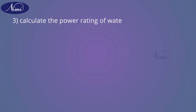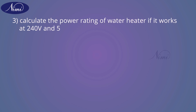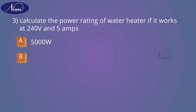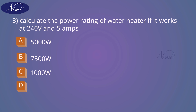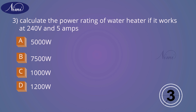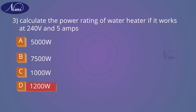Question number three: Calculate the power rating of a water heater if it works at 240 V and 5 amps. Options — A: 5,000 watts. B: 7,500 watts. C: 1,000 watts. D: 1,200 watts. And the answer is D — 1,200 watts.